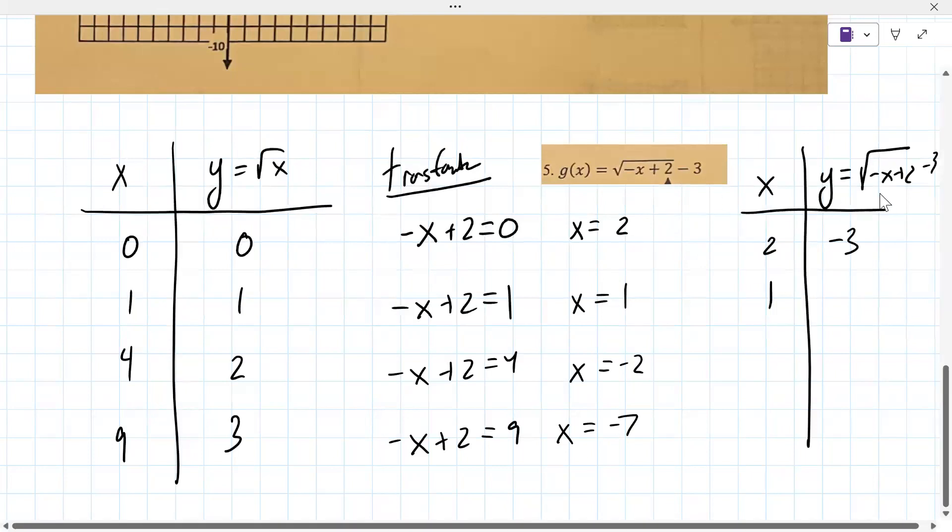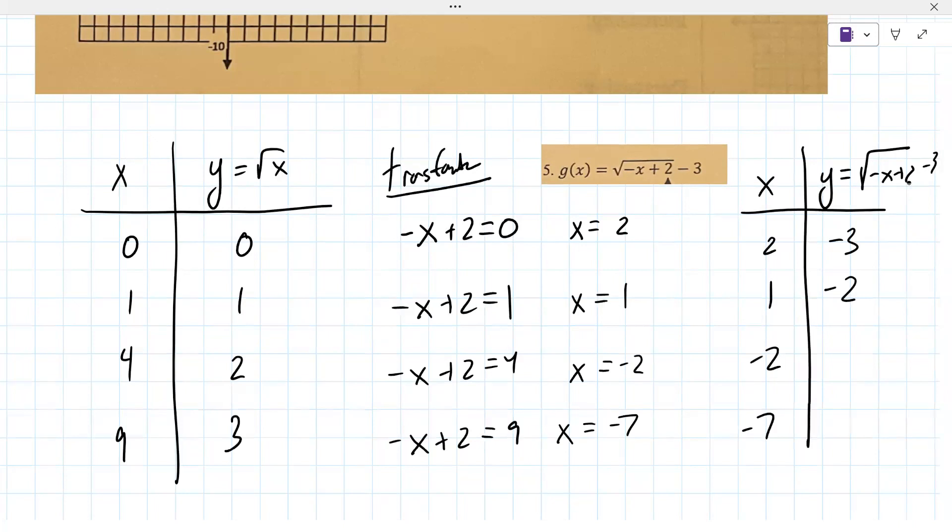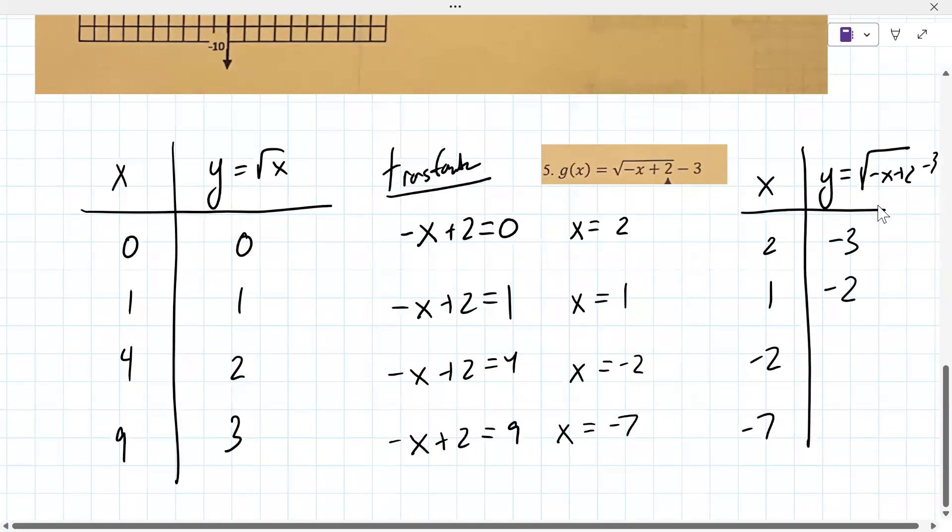When x is 1, it's negative 1 plus 2, which is 1, square root of 1 is 1, 1 minus 3 is minus 2. Negative 2 is 2, plus 2 is 4, square root of 4 is 2, 2 minus 3 is minus 1. And then the last one here is 0.